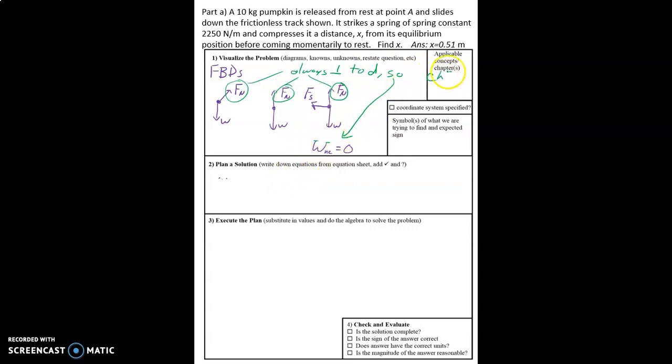All right so we're talking about chapter seven conservation of mechanical energy. We don't need a coordinate system since we're not summing forces. We don't have any reason to have a coordinate system. We are trying to find delta x. It should have a positive value and it should have units of meters.